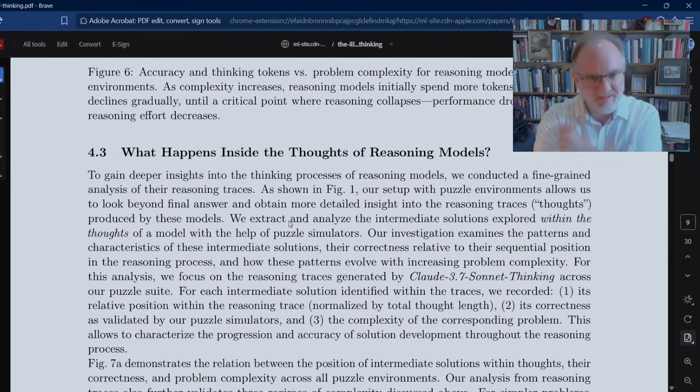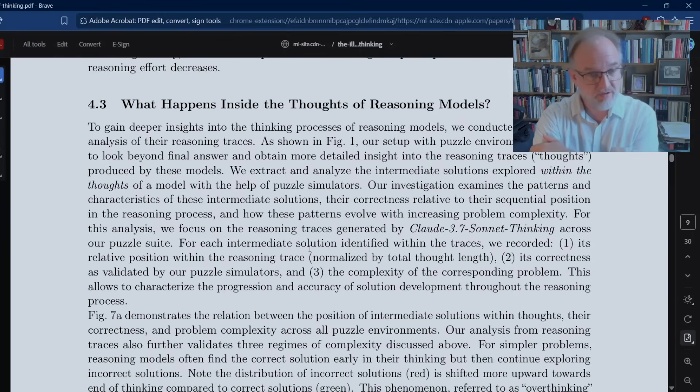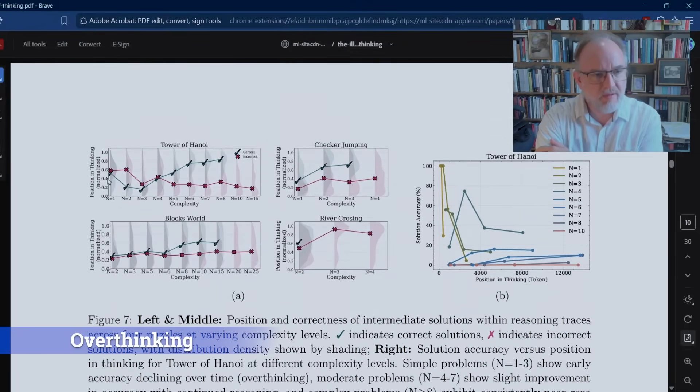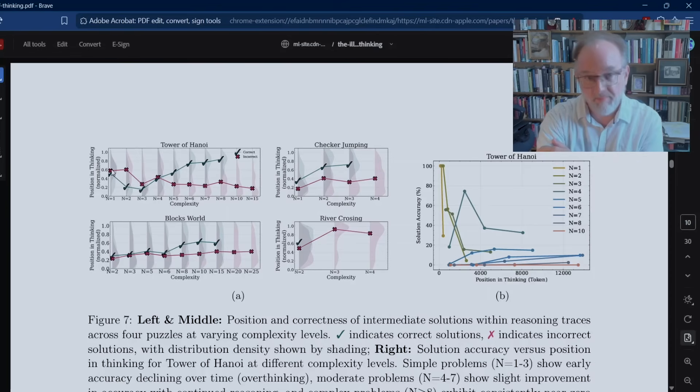Lastly, two more observations here about what happens inside the thoughts of reasoning models. They investigate the reasoning traces inside these large reasoning models. And what they find here is that at low levels of complexity for Tower of Hanoi, one, two, three disks, the computer is actually overthinking the problem. So it's devoting more of its overall time and effort to investigating wrong answers than to investigating right answers. But as we get up higher here, it's arriving at the right answer with more of its thinking time. Then we hit the collapse point, and there are no more right answers above n equals 10.